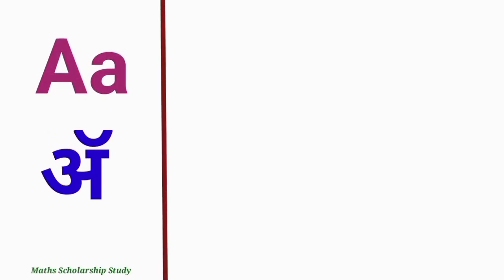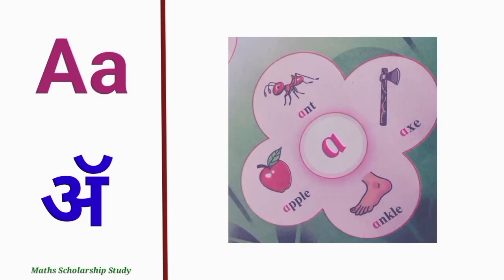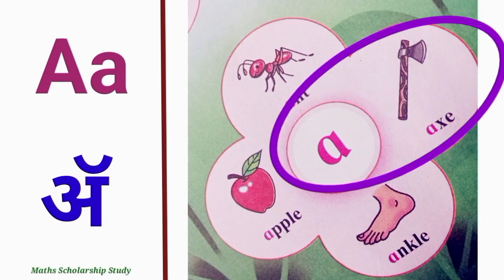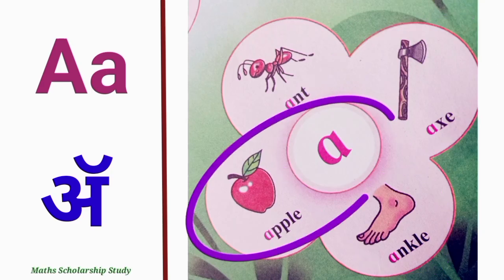Letter A. A says A. A for ant, A for eggs, A for ankle, A for apple.